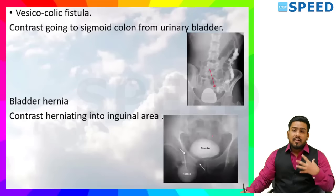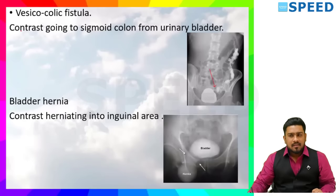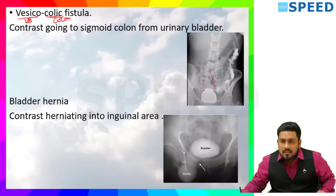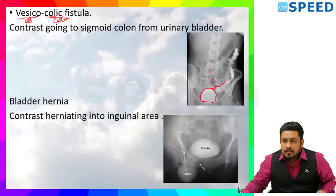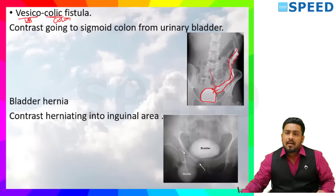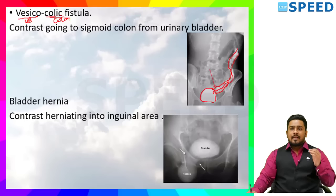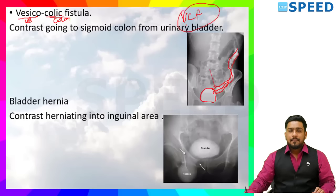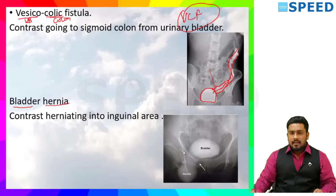Vesico-colic fistula — vesico means urinary bladder, colic means colon — so it is a connection between the urinary bladder and the colon. Here this is the urinary bladder and this is the colon part. I have given contrast into the urinary bladder, but from the urinary bladder it has entered into the colon. This is a classical example of vesico-colic fistula. Next, bladder hernia: here the contrast is extravasating into the inguinal region, giving rise to a hernia — which is the urinary bladder hernia.